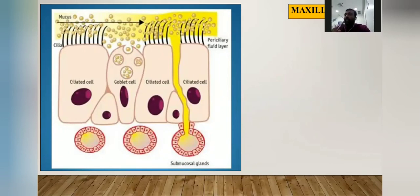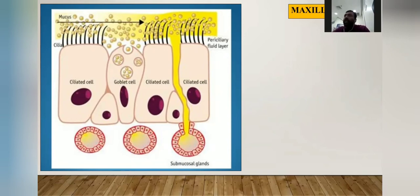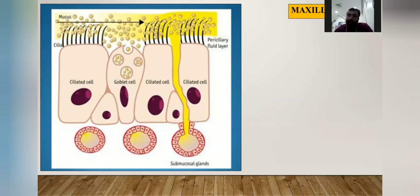Regarding our subject of oral histology, we are most concerned with the lining of the maxillary sinus — that is the pseudostratified ciliated columnar epithelium. In this picture, you can see mucus forming a layer on the surface of this epithelium, with cilia lashing the mucus away. This is a pictorial representation.